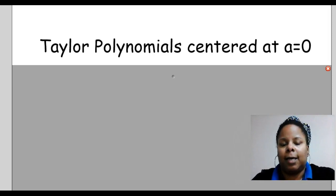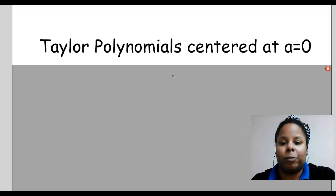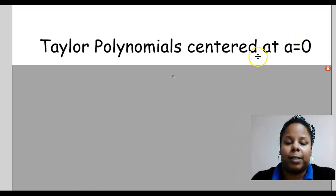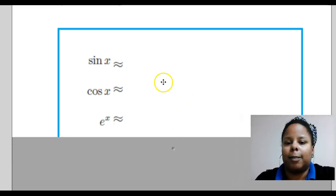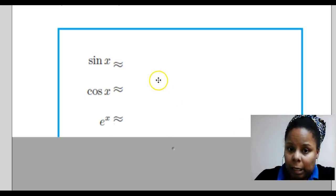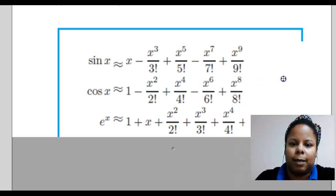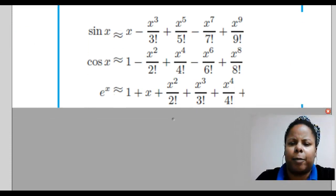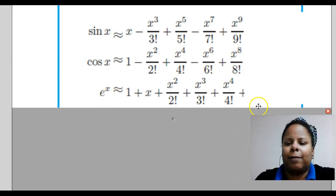Last video we looked at what Taylor polynomials are and how to determine them for specific functions. The functions have to be continuously differentiable, i.e., always have derivatives of the function at the value a, in this case a equals zero. We have three functions — sine x, cosine x, and e to the x — which can be approximated using Taylor polynomials. For sine of x we have a 9th degree Taylor polynomial, for cosine of x an 8th degree, and for e to the x a 4th degree Taylor polynomial.